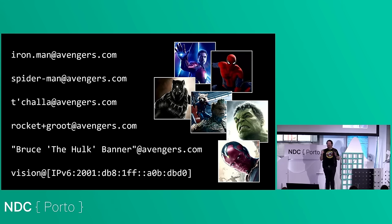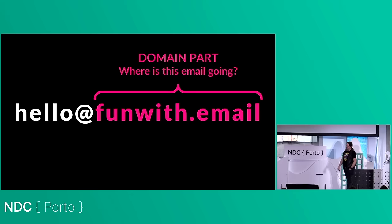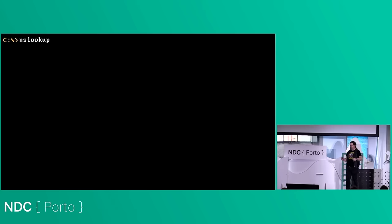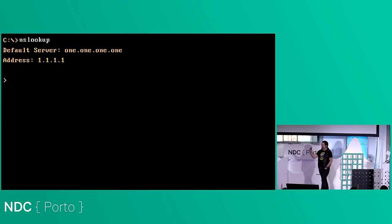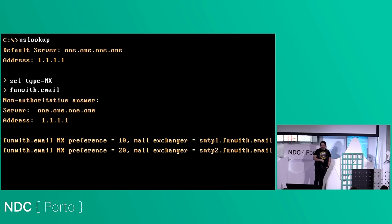So maybe validity is not really the right question. An email address consists of two parts: the domain part, which controls where the email is going, and the local part, which controls what happens when it gets there. The way email works is you can speak email using telnet from a command prompt. I can open a command prompt, type NS lookup, set type to MX to look for mail exchanger records, and see what the mail exchanger records are for funwith.email — the domain I set up for this talk.